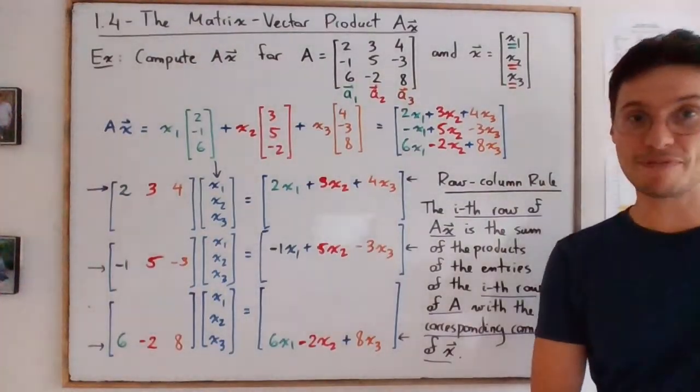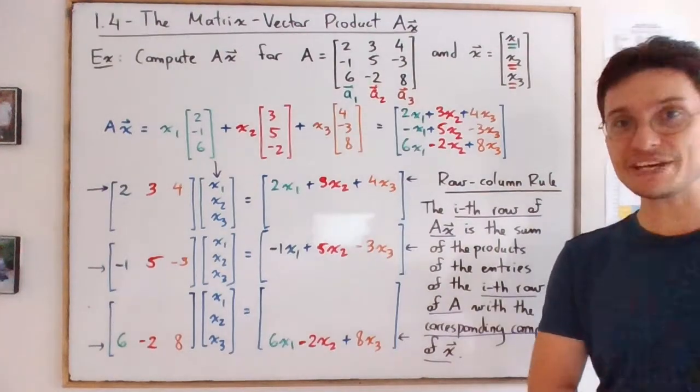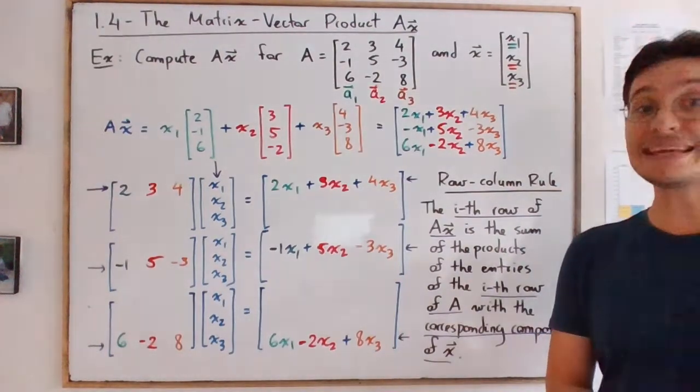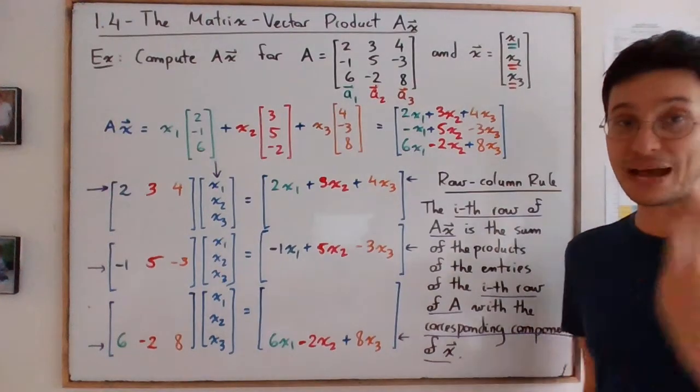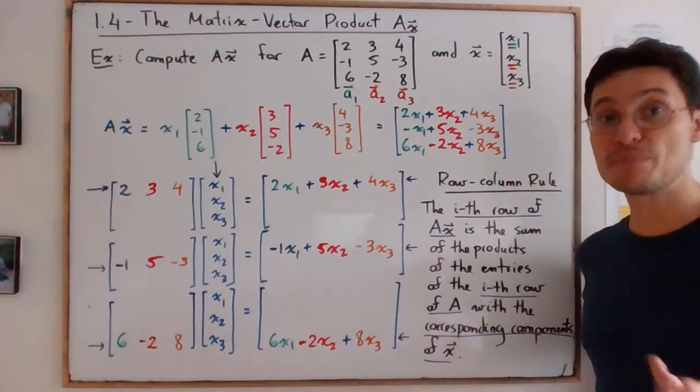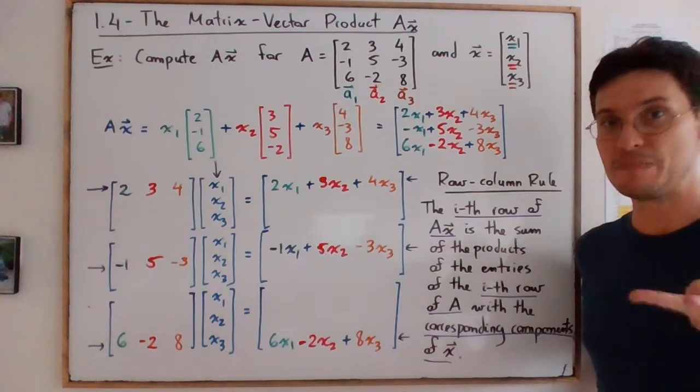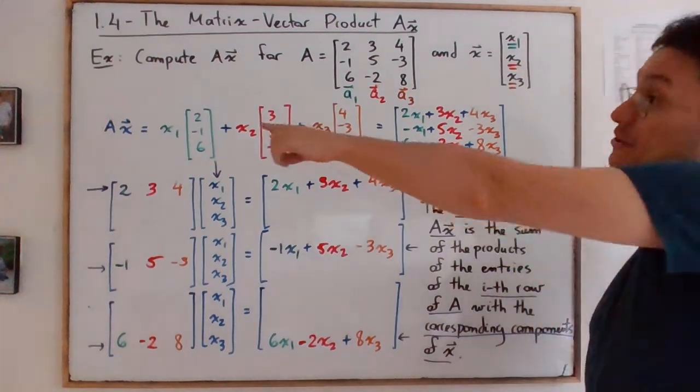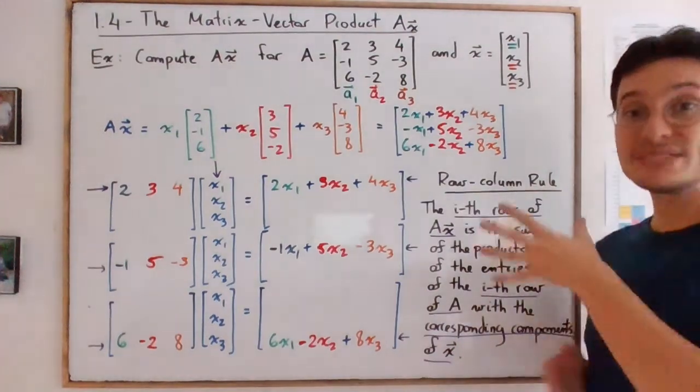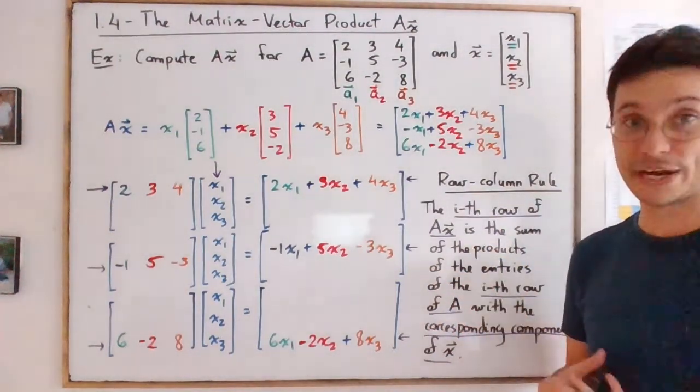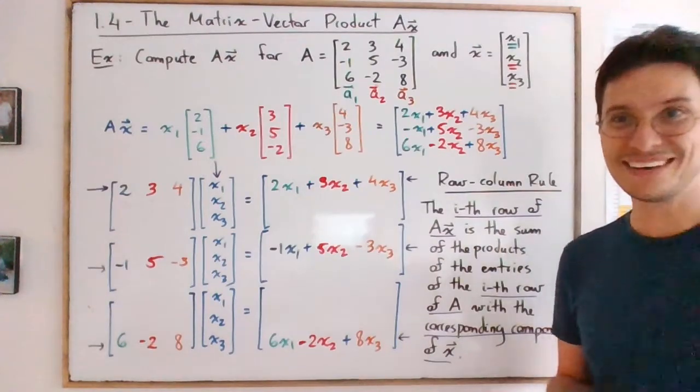All right, hopefully this was helpful. In the second video, so next video, what we're going to do is we're going to put that rule in application. So I'm going to write an example and we're going to compute the matrix vector product in the two ways that we have learned, meaning as a linear combination and then using this rule. And you will see how this rule sometimes leads to quicker results. See you there. Bye.